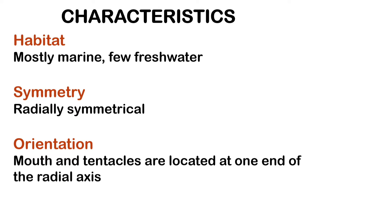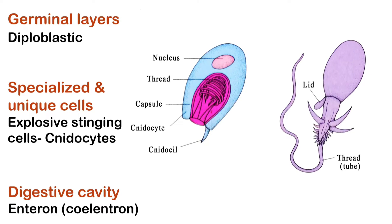The orientation of the cnidarians is such that the mouth and tentacles are both located at one end of the radial axis. Cnidarians are diploblastic, i.e. the body wall is composed of two principal layers: the outer epidermis and the inner gastrodermis, separated by the mesoglea, a membrane or jelly-like layer. There are some specialized and unique cells in the body of cnidarians known as cnidocytes.